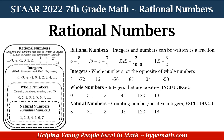Rational numbers are integers and numbers that can be written as a fraction. Some examples are the whole number 8, because 8 can be written as 8 over 1. That's with any whole number — when you convert it into a fraction, it's that number in the numerator over 1 in the denominator. Next, we have the square root of 9, which equals 3, and 3 can be written as 3 over 1.